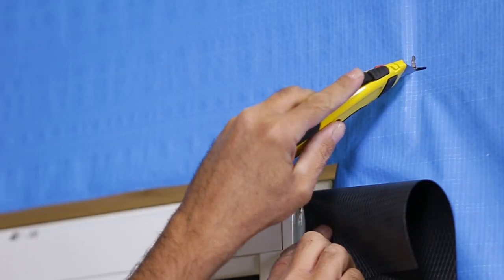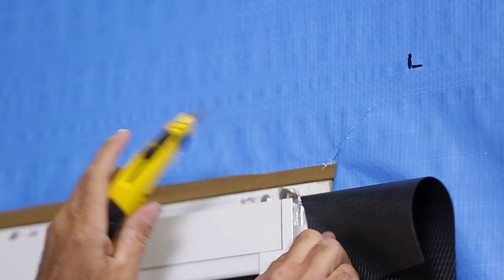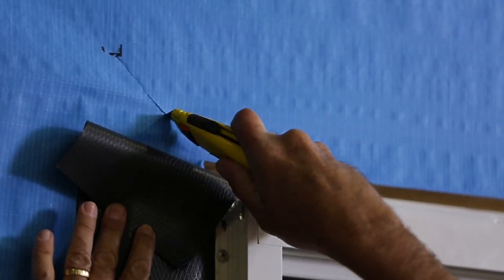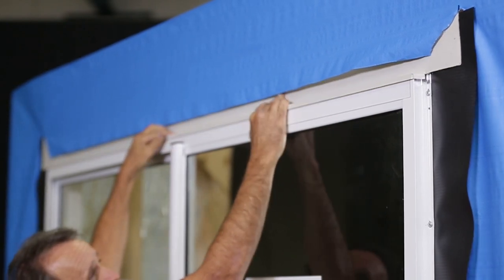The head flashing should go behind the sarking, so we'll need to cut a slit 150 millimeters out from each side of the window to tuck it under. You'll notice that the head flashing sits on top of the jamb flashing and the jamb flashing overlaps the sill flashing.